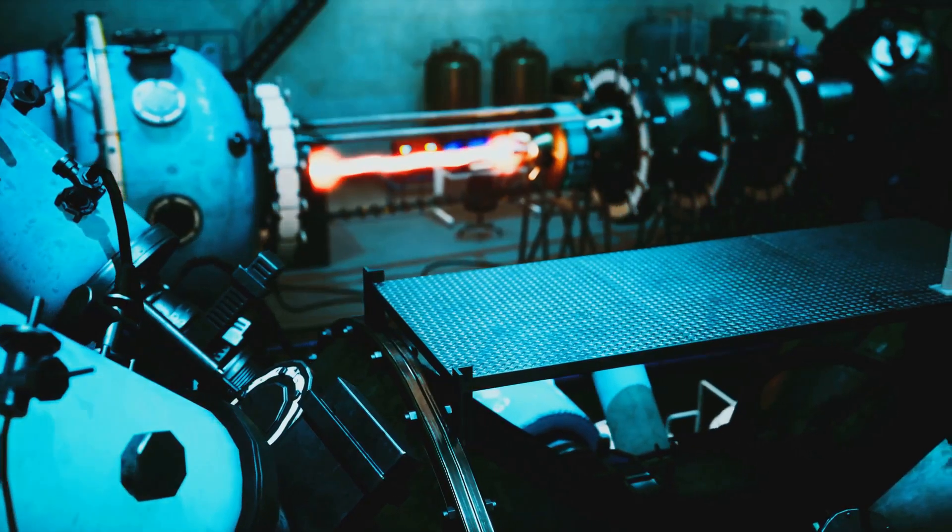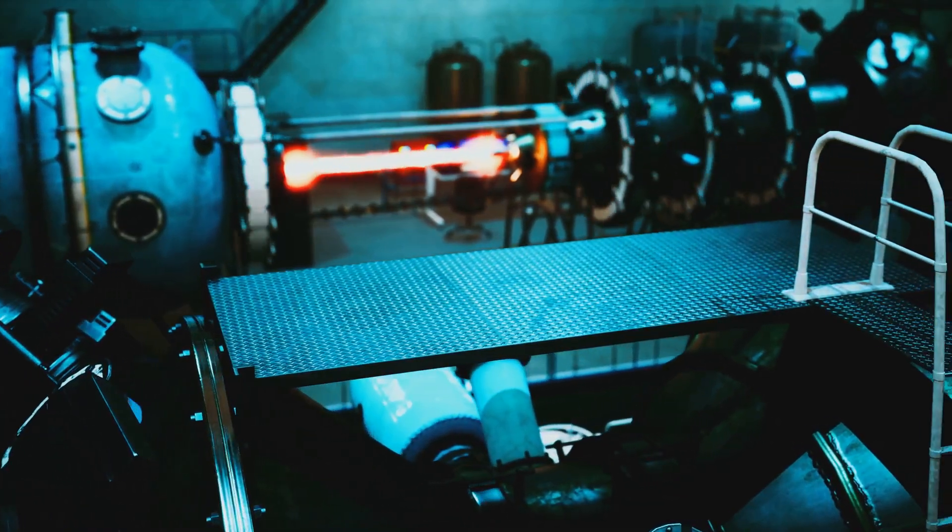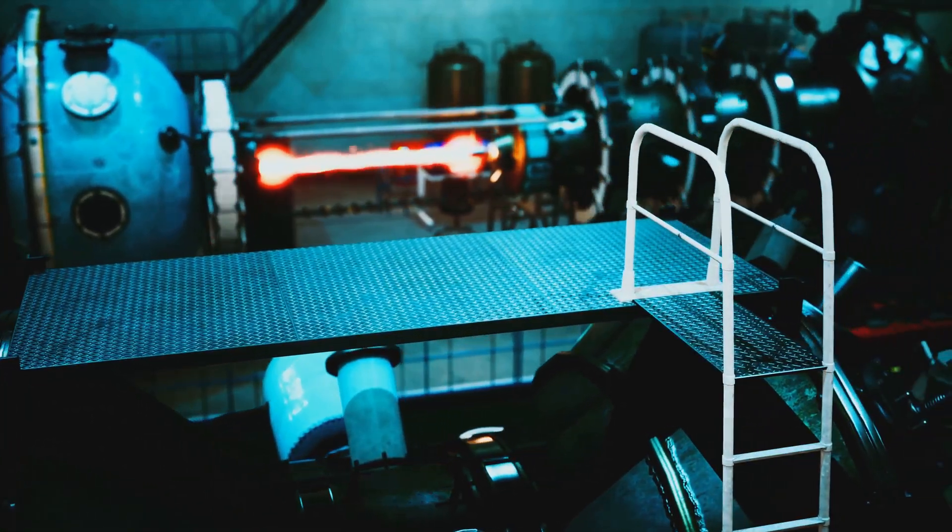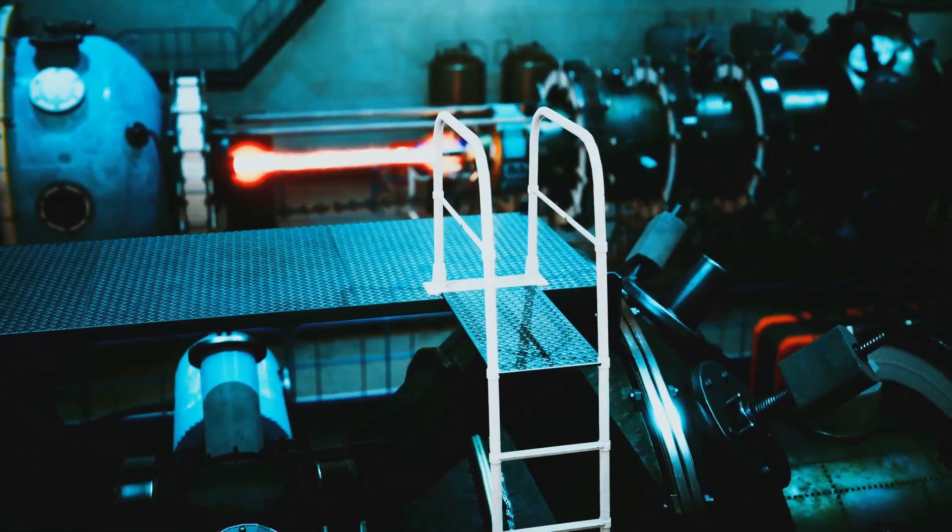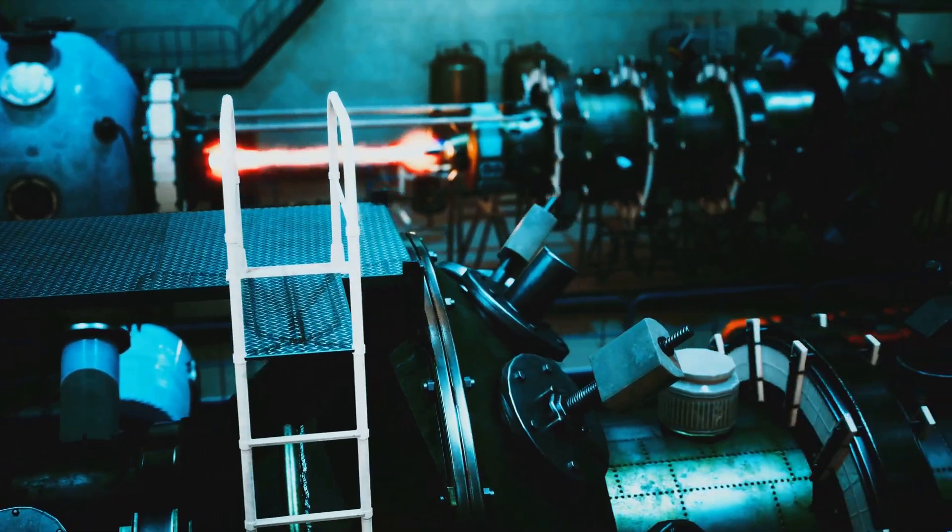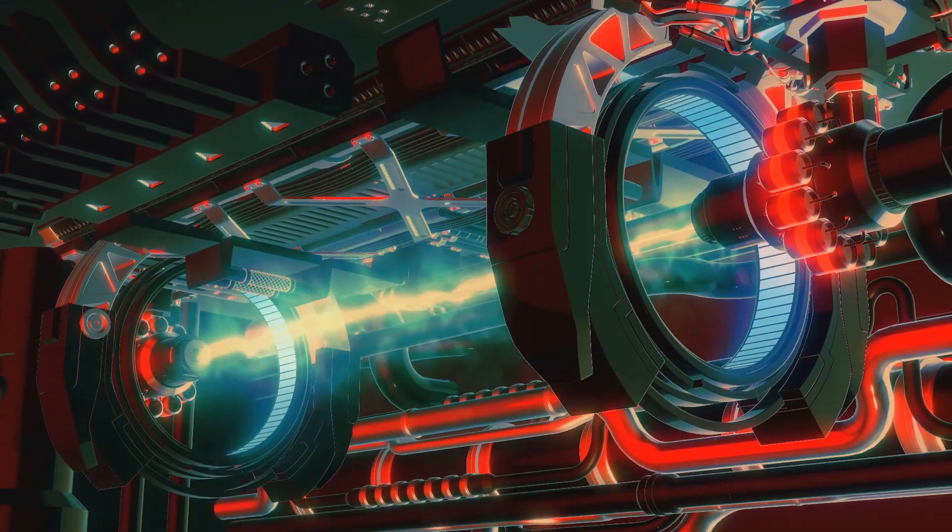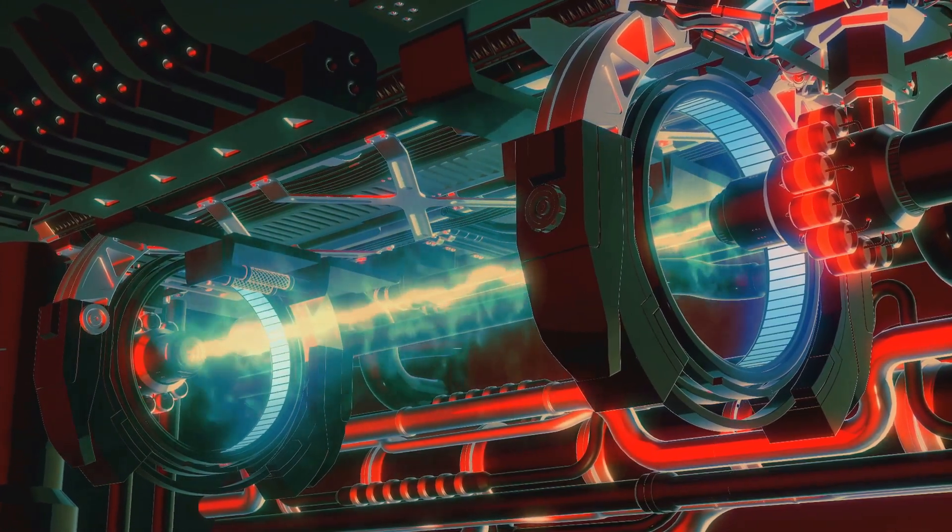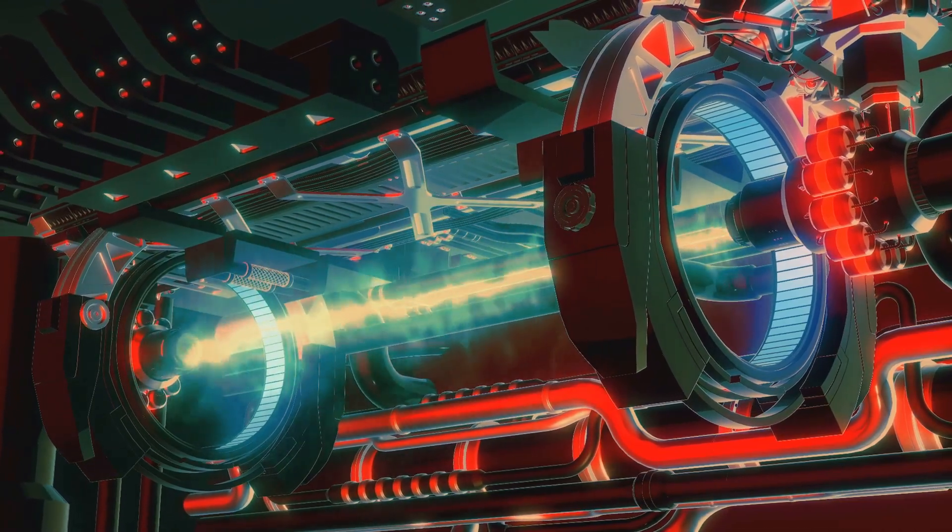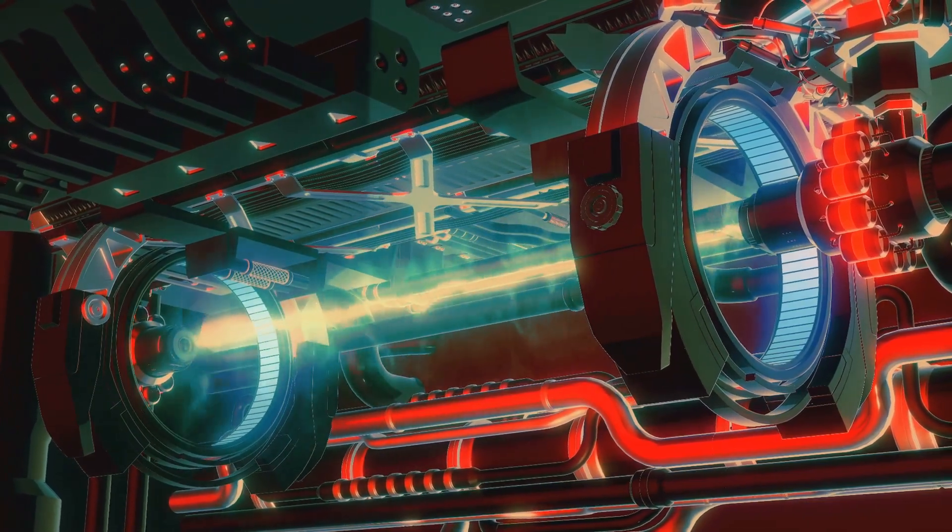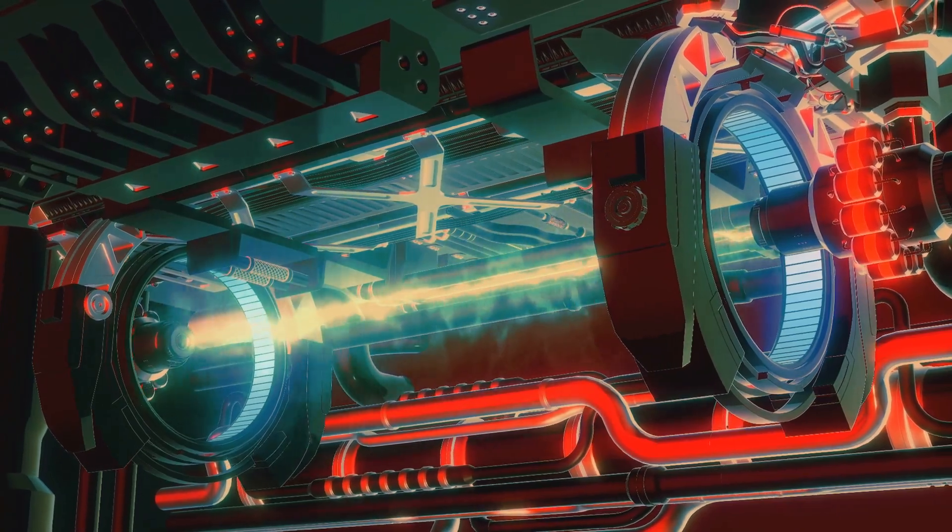Inside ASML's engineering marvels. EUV machines are not your average pieces of factory equipment. They represent the pinnacle of modern engineering and are crucial to the production of the most advanced microchips in the world. These machines are colossal structures, towering over four meters high and weighing close to 200 tons. Their sheer size and complexity are a testament to the incredible advancements in technology and engineering.